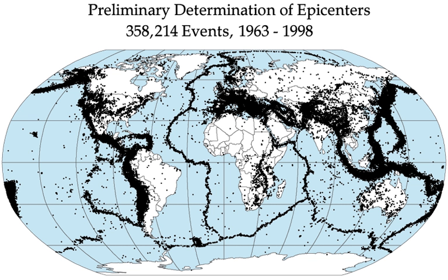Where plate boundaries occur within the continental lithosphere, deformation is spread out over a much larger area than the plate boundary itself. In the case of the San Andreas Fault continental transform, many earthquakes occur away from the plate boundary and are related to strains developed within the broader zone of deformation caused by major irregularities in the fault trace. The Northridge earthquake was associated with movement on a blind thrust within such a zone.